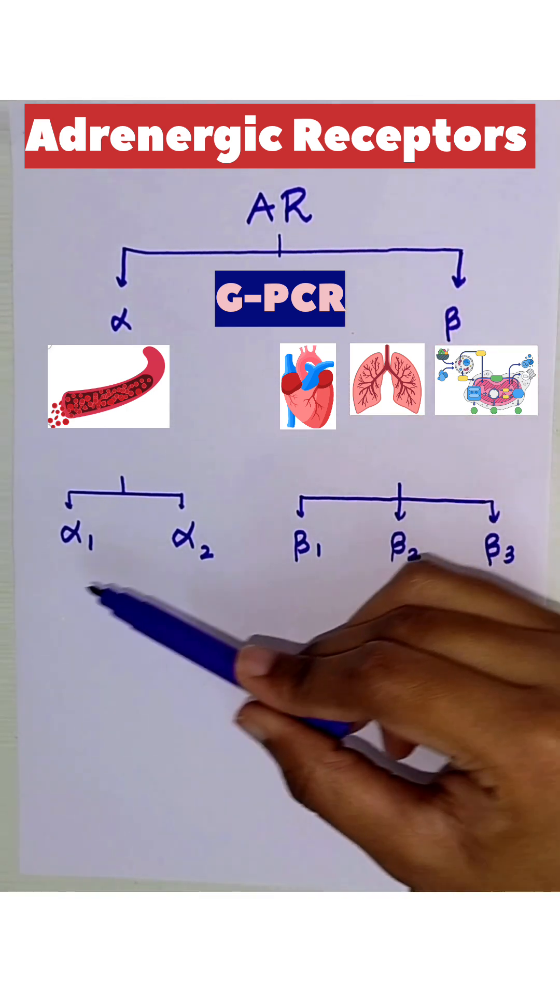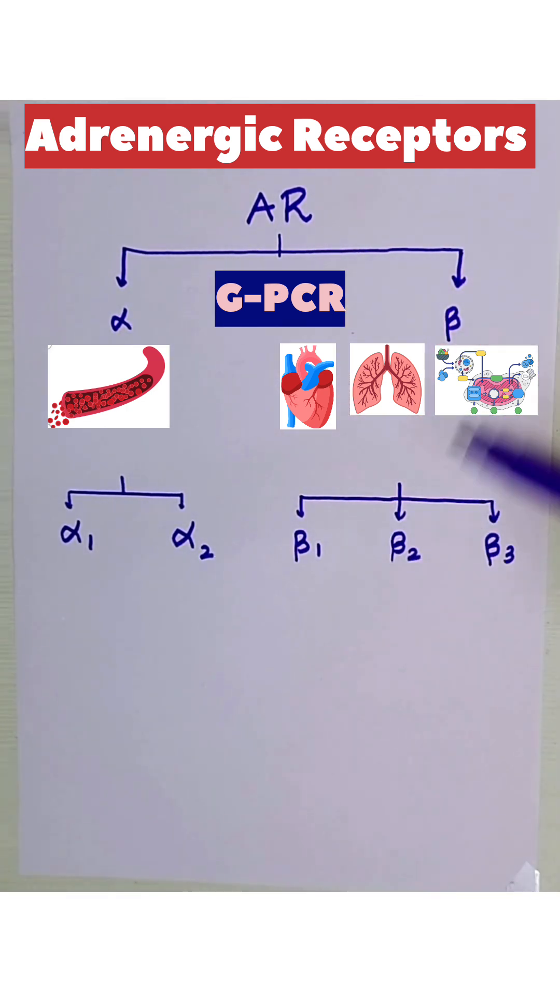Alpha is further divided into alpha1, alpha2, and beta into beta1, beta2, and beta3.